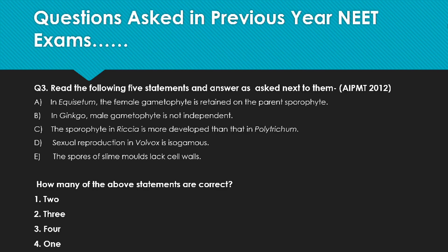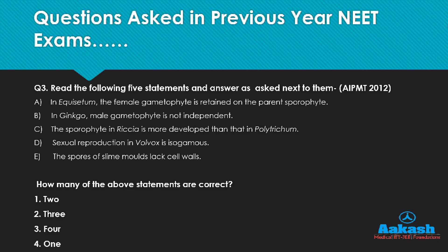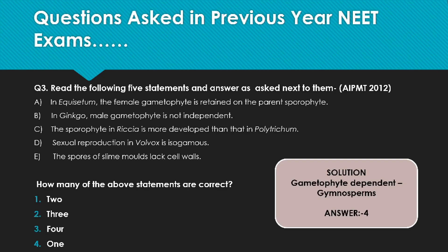Moving to the last statement: the spores of slime molds lack cell walls. This is a wrong statement because slime mold spores possess cellulosic cell walls. So out of 5 statements, there are 4 wrong statements and only one correct statement. As the question asks how many of the above statements are correct, we can easily choose option 4, because only one statement is correct.